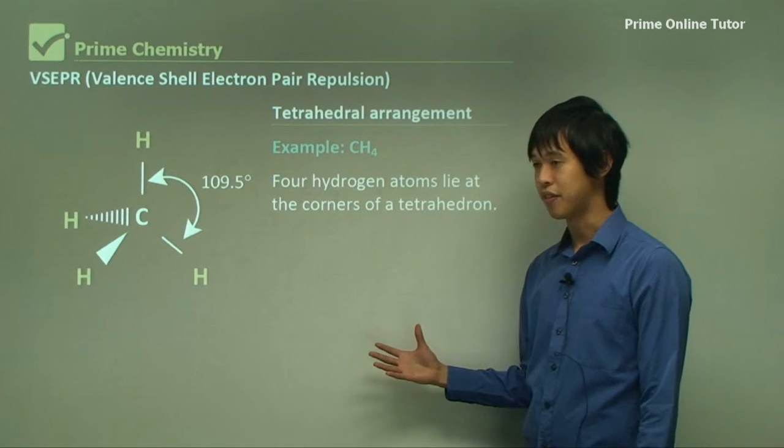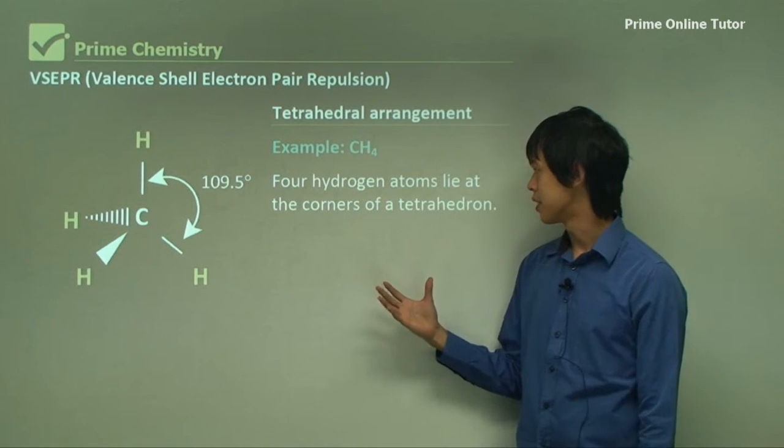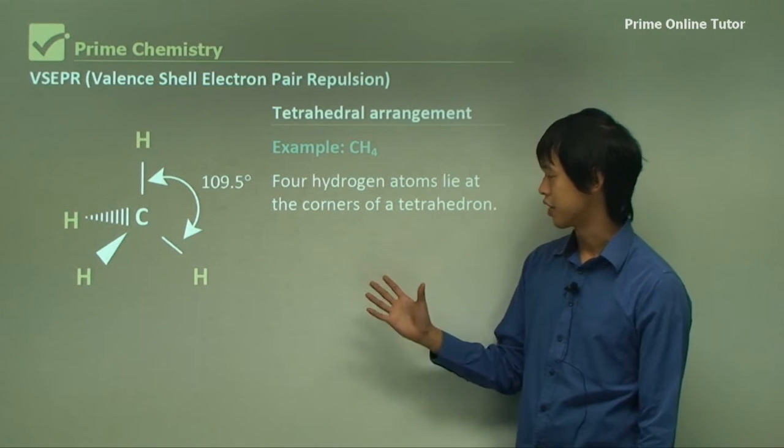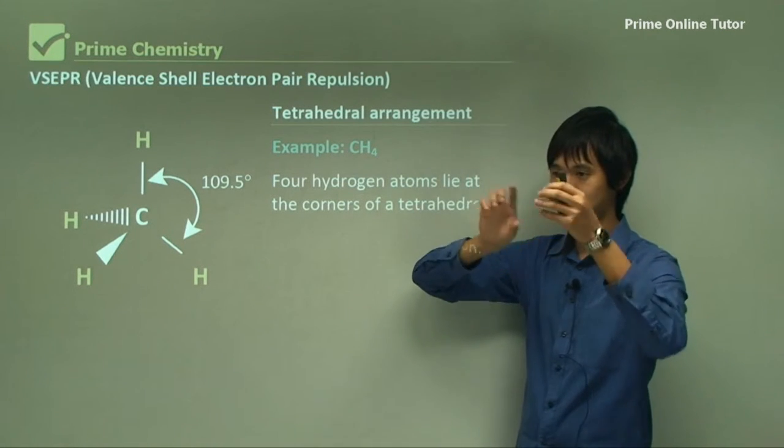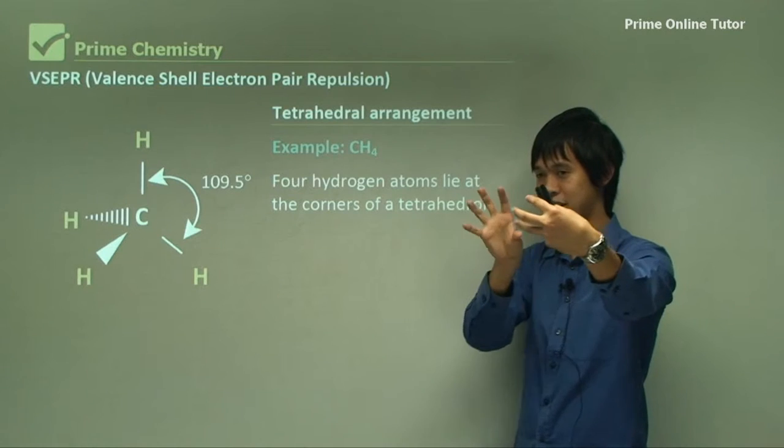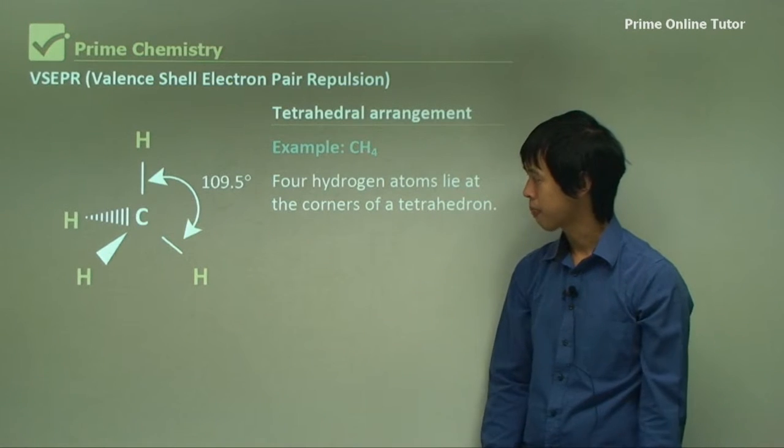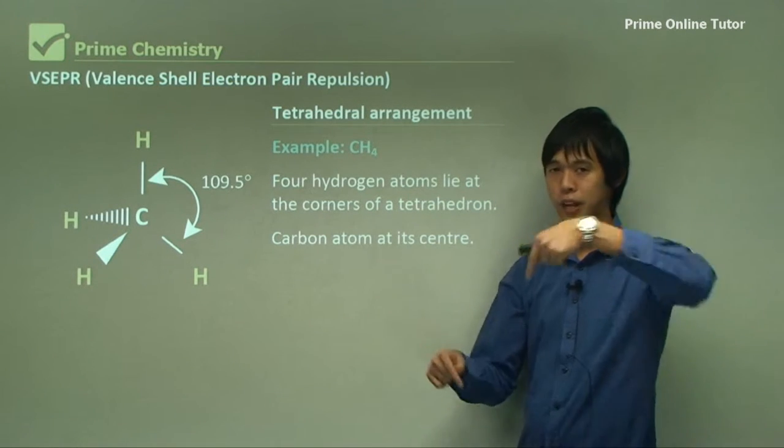So example, again, as I mentioned, CH4. Four hydrogen atoms lie at the corners of a tetrahedron. So that's what I mentioned. There's four hydrogens, one pointing out towards you, and then three kind of pointing back into the board. And a carbon atom is right in the middle.